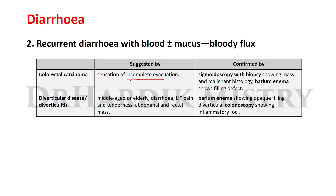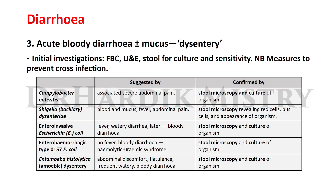Colorectal carcinoma is suggested by sensation of incomplete evacuation, confirmed by sigmoidoscopy with biopsy showing mass and malignant histology, and barium enema showing filling defect. Diverticular disease or diverticulitis typically affects middle-aged or elderly patients with diarrhea with blood ± mucus, left iliac fossa pain and tenderness, and abdominal or rectal mass, confirmed by barium enema showing diverticula and colonoscopy showing inflamed foci.